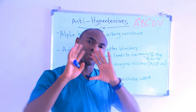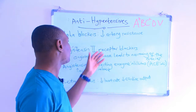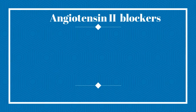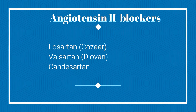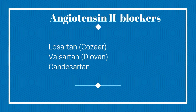Angiotensin 2 receptor blockers are drugs that block the receptors that receive angiotensin 2. They bind to those receptor sites so angiotensin 2 finds no receptors to bind to, causing a fall in blood pressure. Examples include losartan, also called Cozaar; valsartan, also called Diovan; and candesartan. Notice that the suffix for this class is '-sartan,' so any drug ending in '-sartan' is an angiotensin 2 receptor blocker.